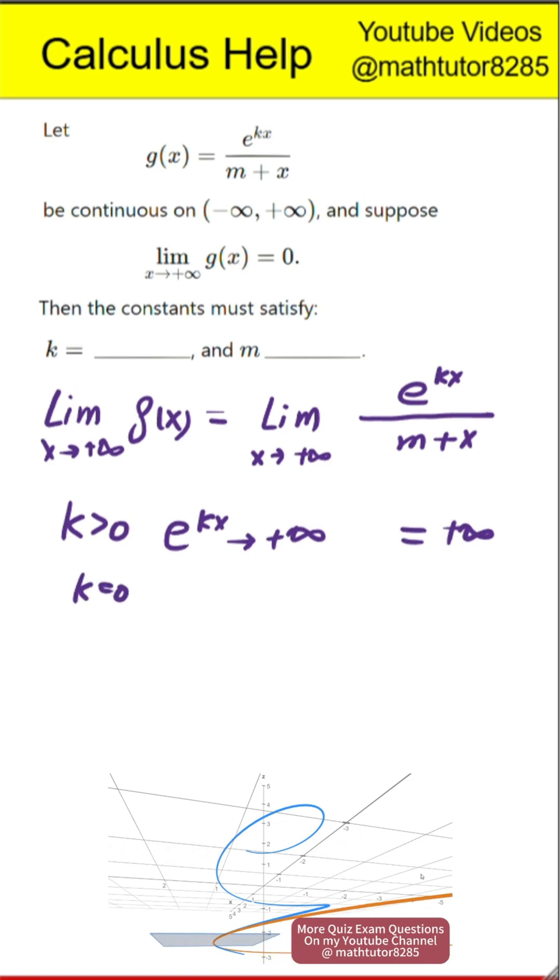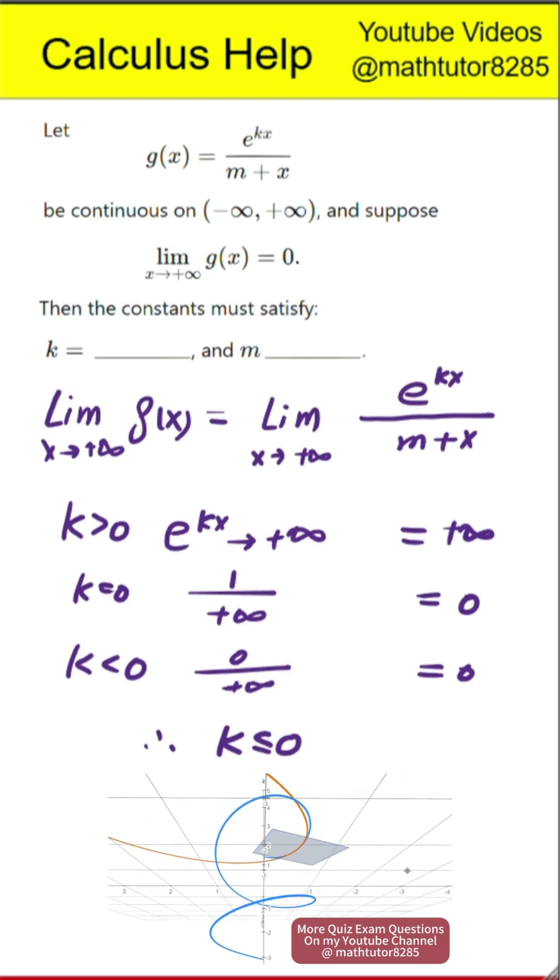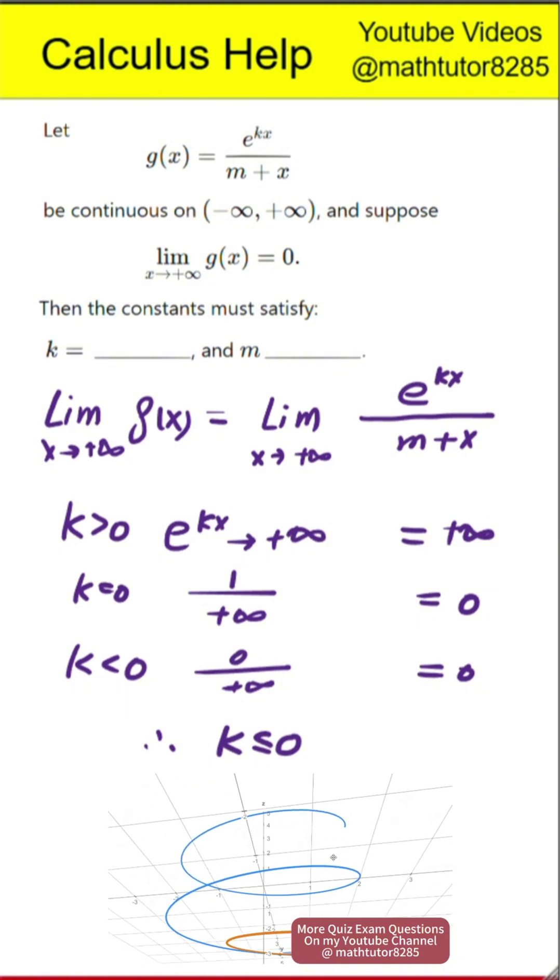If k equals zero, then the numerator is always one, and the denominator goes to infinity, so the limit is zero. If k is less than zero, then exponential of k times x goes to zero, while the denominator goes to infinity, so again the limit is zero.